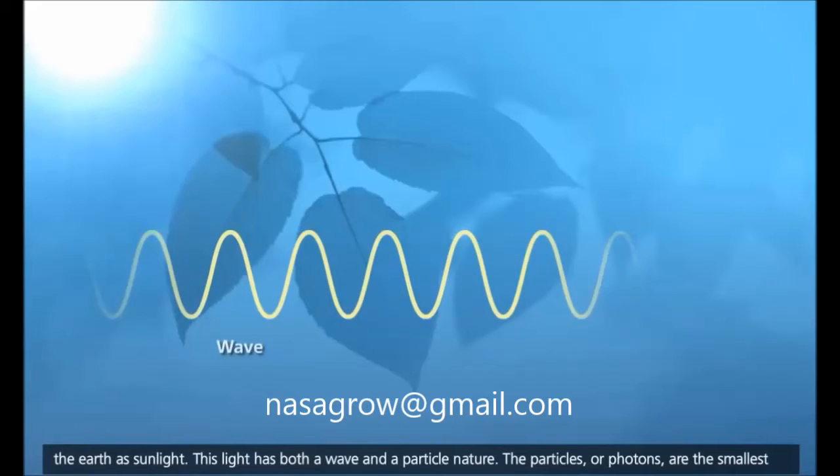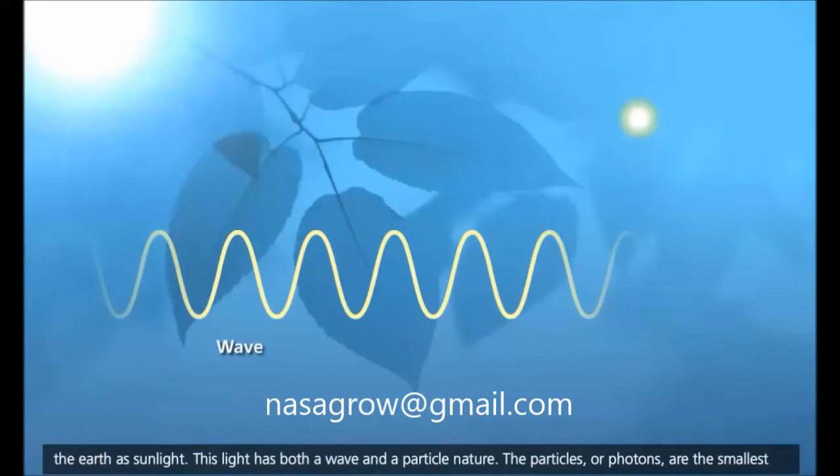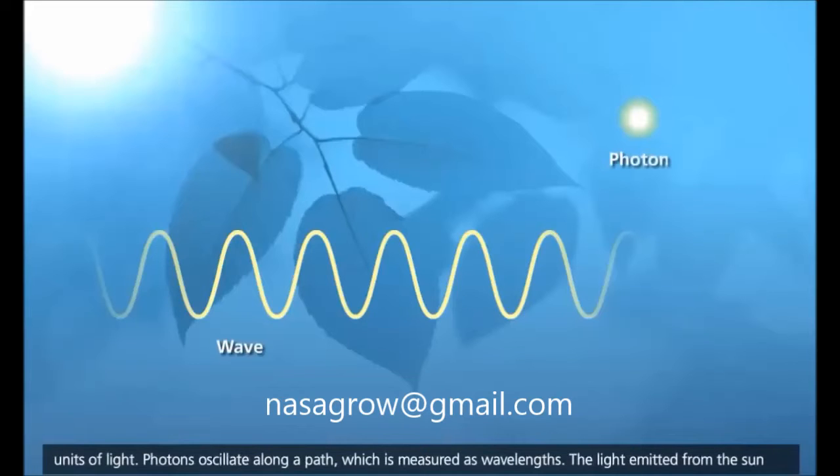This light has both a wave and a particle nature. The particles, or photons, are the smallest units of light. Photons oscillate along a path, which is measured as wavelengths.